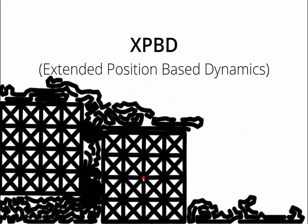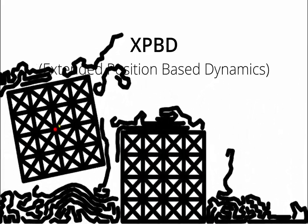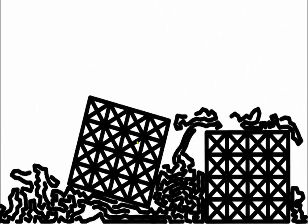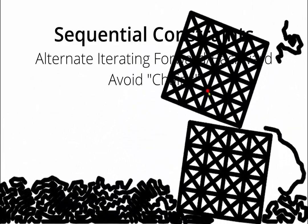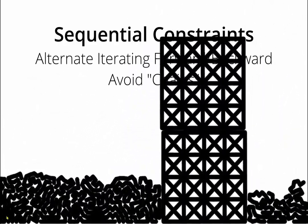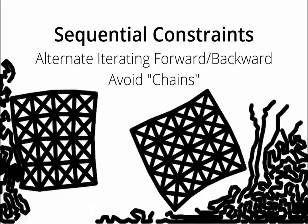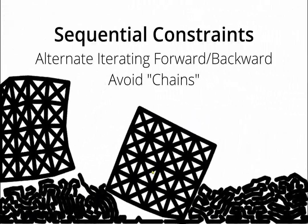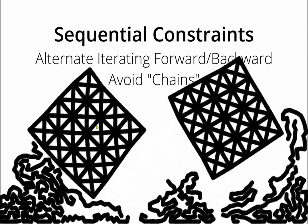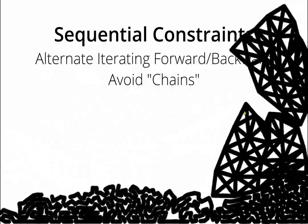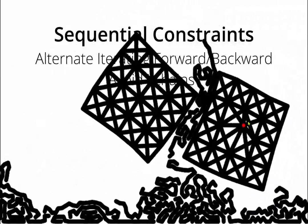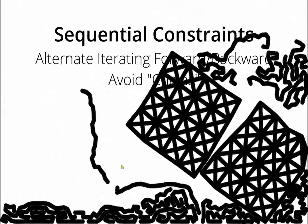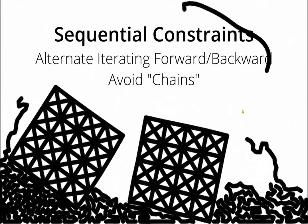This is my initial implementation of XPBD. To simulate stiff materials, I use sequential constraint updates. And to reduce the bias that comes with that, I alternate between iterating my constraints forwards and backwards, as well as avoid iterating chains of constraints where their endpoints coincide with each other.